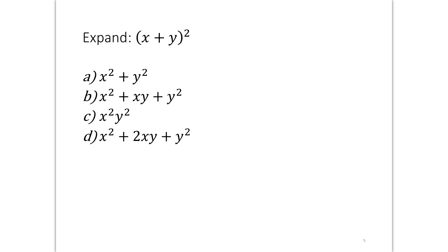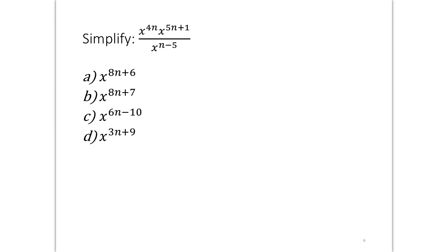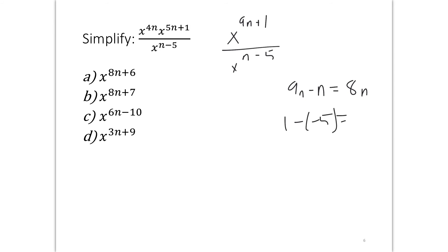Let's try a multiple choice question: expand x plus y squared. Pause the video. For an exponent simplification, combining gives x to the 9n plus 1 over x to the n minus 5. Subtracting exponents: 9n minus n equals 8n, and 1 minus negative 5 equals 6. So the answer is x to the 8n plus 6, which is answer A.